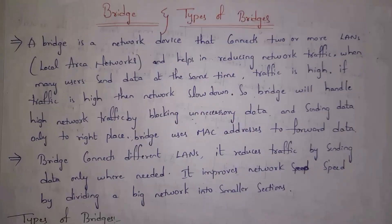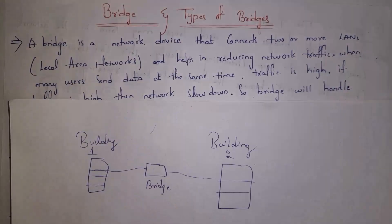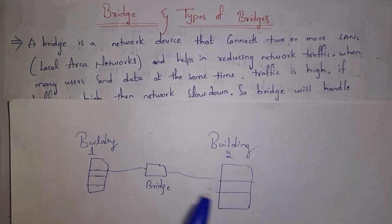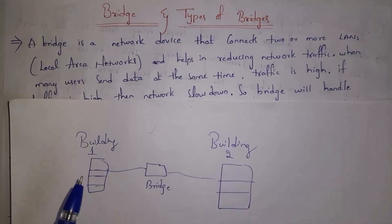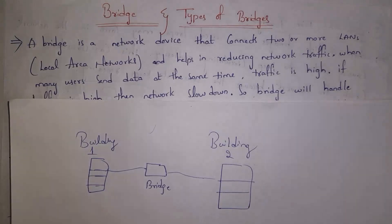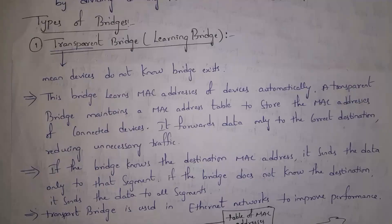Next I will explain what is a bridge and various types of bridges. A bridge is a device used to connect multiple local area networks. For example, a college with two buildings — building one is one LAN and building two is another LAN — can be connected using a bridge. If you connect the two buildings directly without a bridge, they form a single network, causing very high traffic and decreased network performance. That is why we need a bridge — it divides the network into two segments, handles traffic, and improves performance.